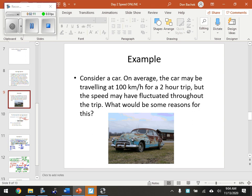Next it says here, consider a car. On average, a car may be traveling at 100 kilometers an hour for a two-hour trip, but the speed may have fluctuated throughout the trip. What would be some reasons for a car fluctuating speed over that time? Speed limit changes, sure. What else? Up and down hills. Wind. Traffic, right? Maybe slowing down for a town. You can't go 100 kilometers for the entire time. Weather conditions, et cetera.